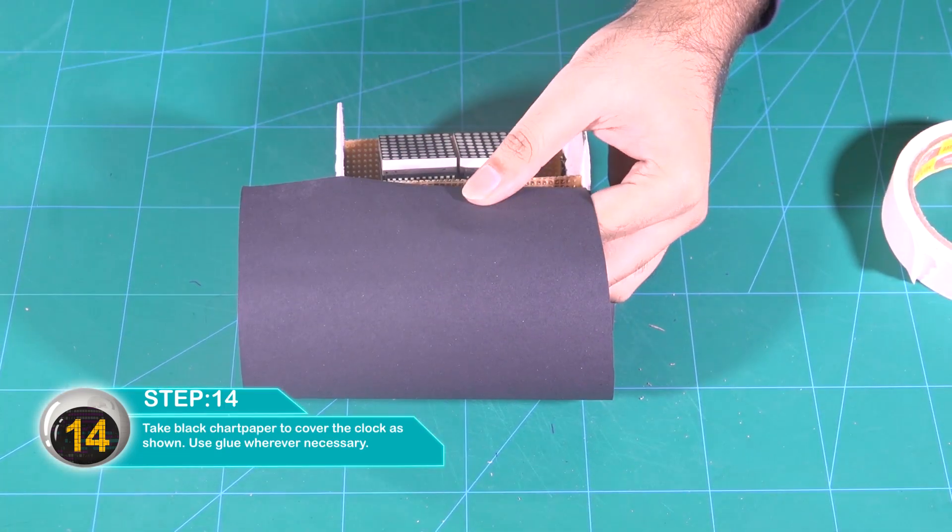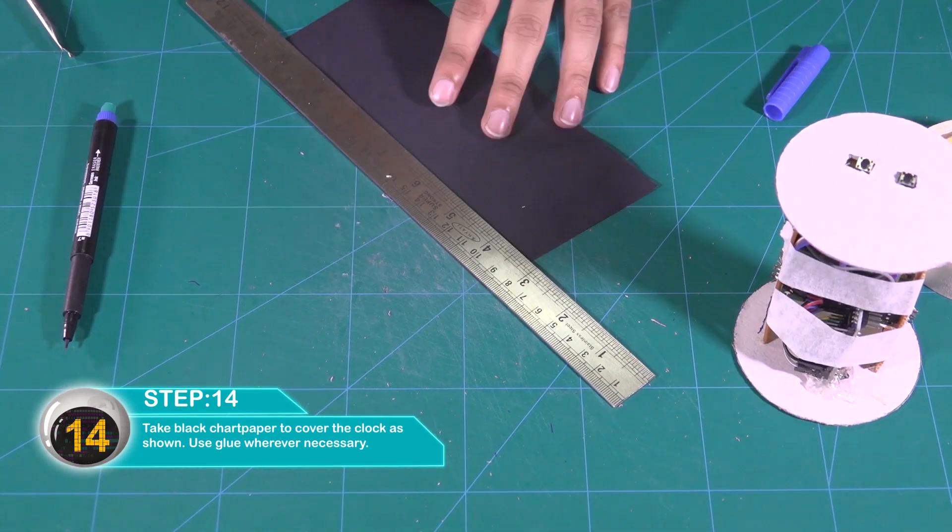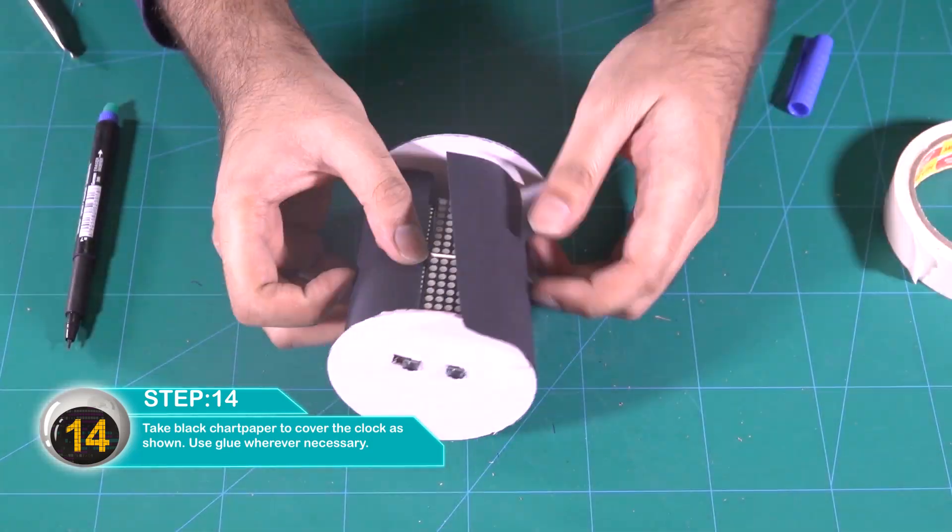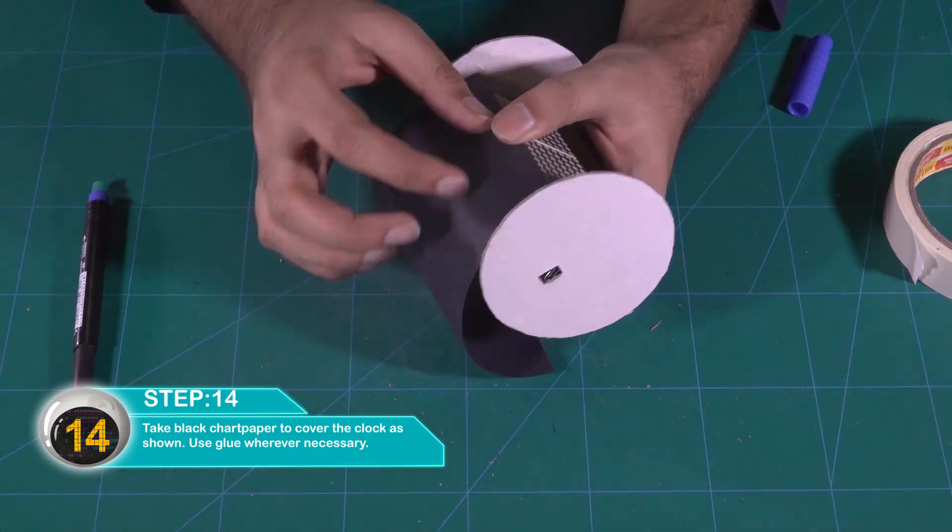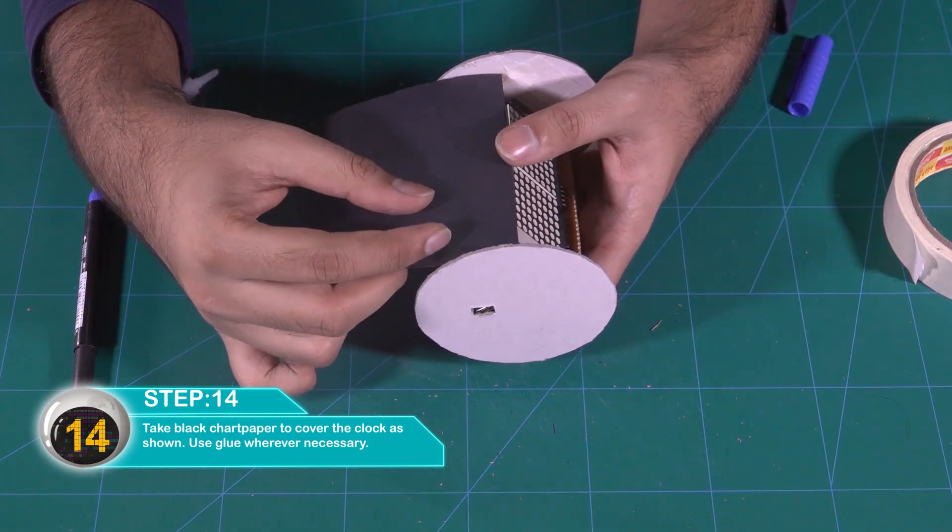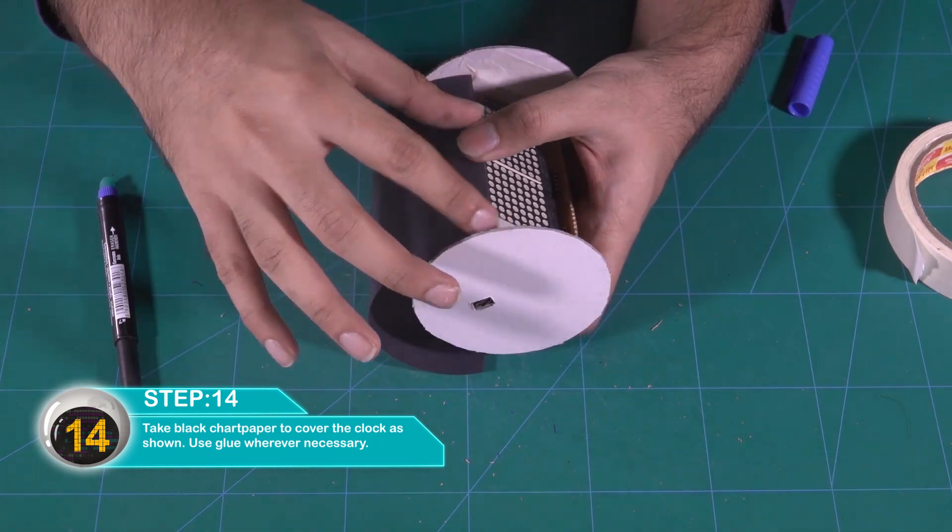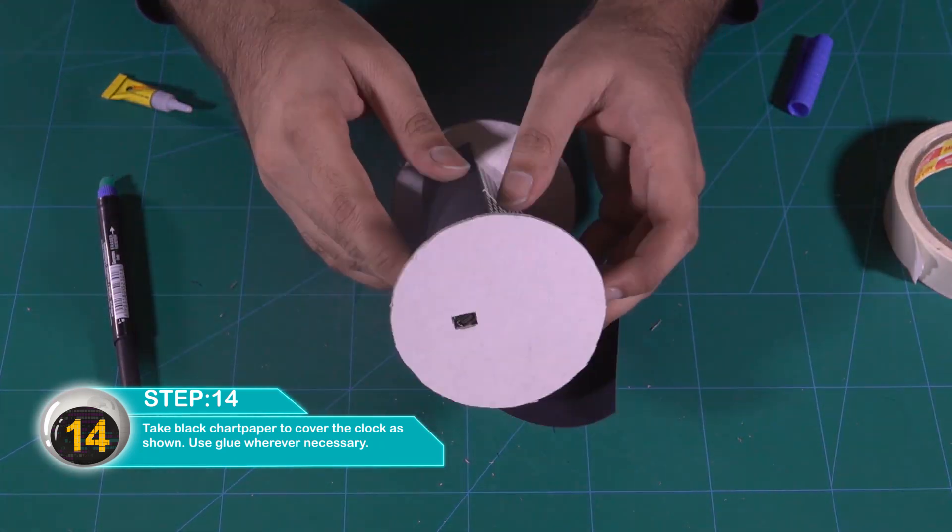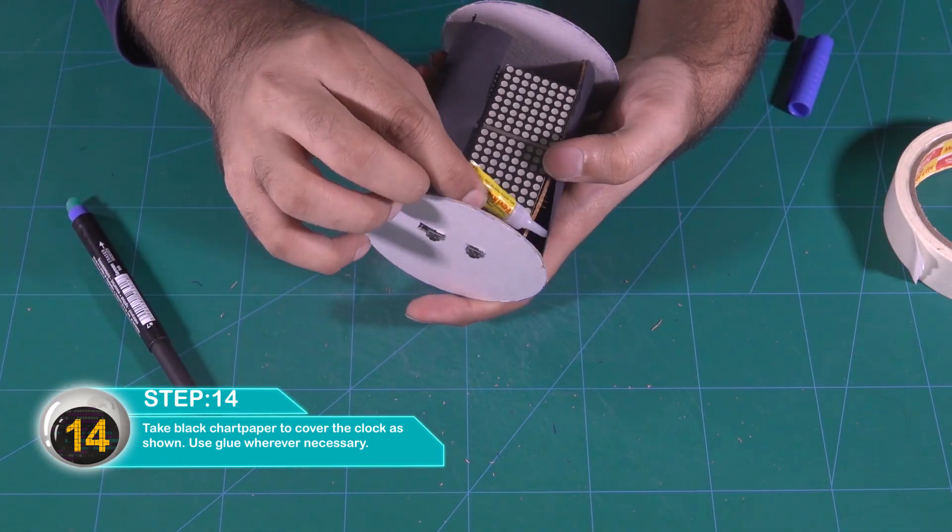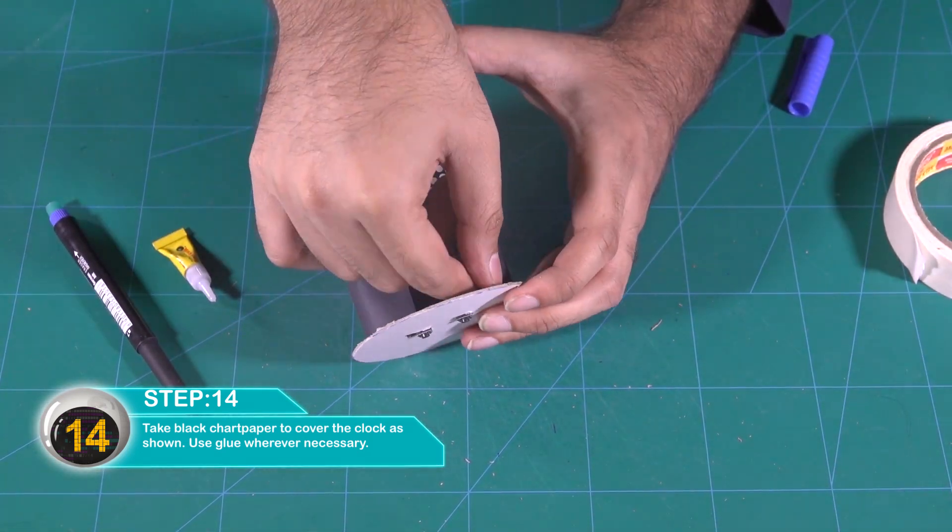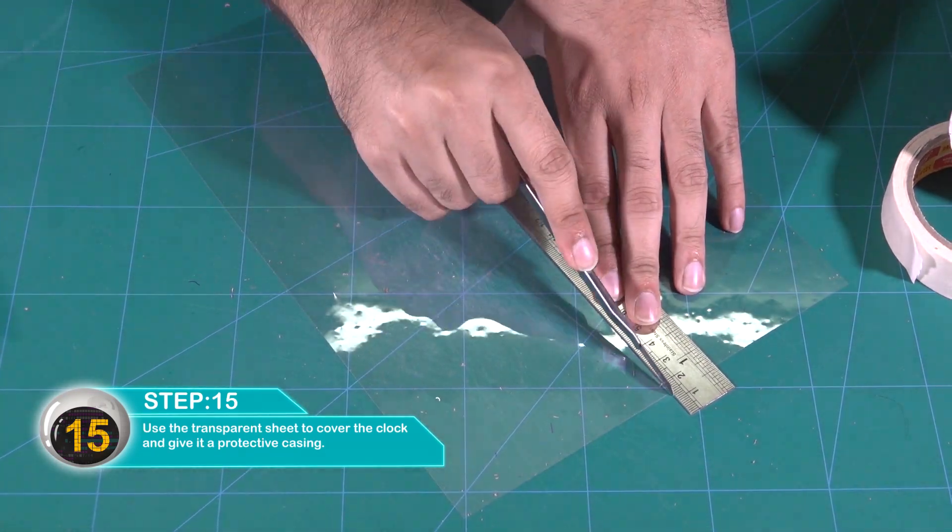Now, use black chart paper and cover this clock. Use glue wherever necessary. Use OHP sheet to cover the clock so it becomes a protective casing.